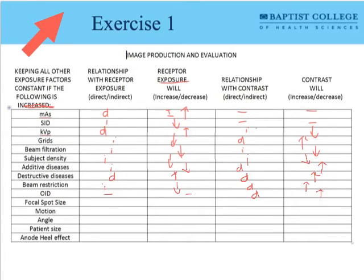Focal spot size is best thought of as a geometrical factor. It really has no relationship to density — if I had the exact same mAs and changed my focal spot size, I should get the same receptor exposure if the machine is appropriately calibrated. It doesn't have an effect on contrast either. It's essentially null across the board as a geometrical factor.